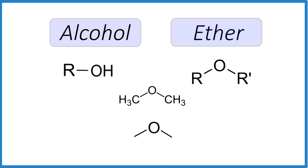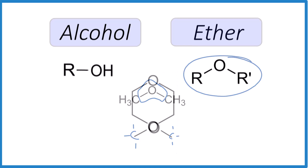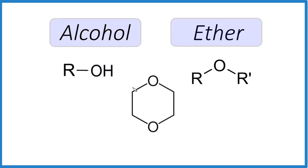Let's try another one. Again, these are the same molecules in different representations. Is this an alcohol or an ether? Pause and give it a try. We see pretty clearly that we have that oxygen right there in the middle, with single bonds to a carbon on each side — that's going to be the ether. Down here we'd have a carbon; you could draw the hydrogens in if you wanted.